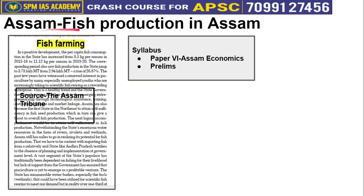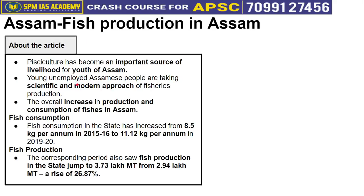The next article is taken from the Assam segment. It talks about fish production in Assam — this topic is important from Paper 6, Assam Economics. Pisciculture has become an important source of livelihood in Assam. Many youth who were suffering from unemployment have now engaged in fisheries production using scientific and modern approaches, which is generating employment and increasing fish production. Fish is also an important source of protein.